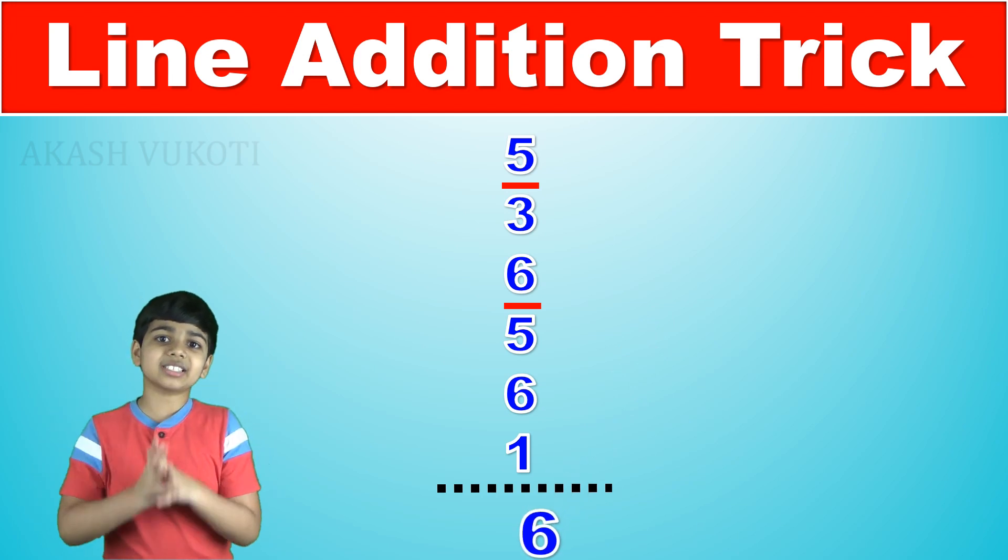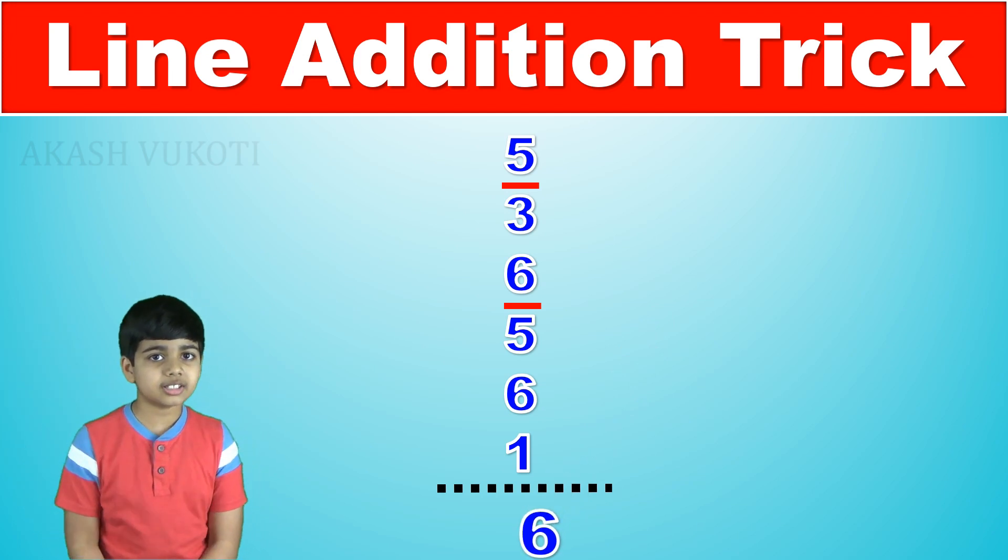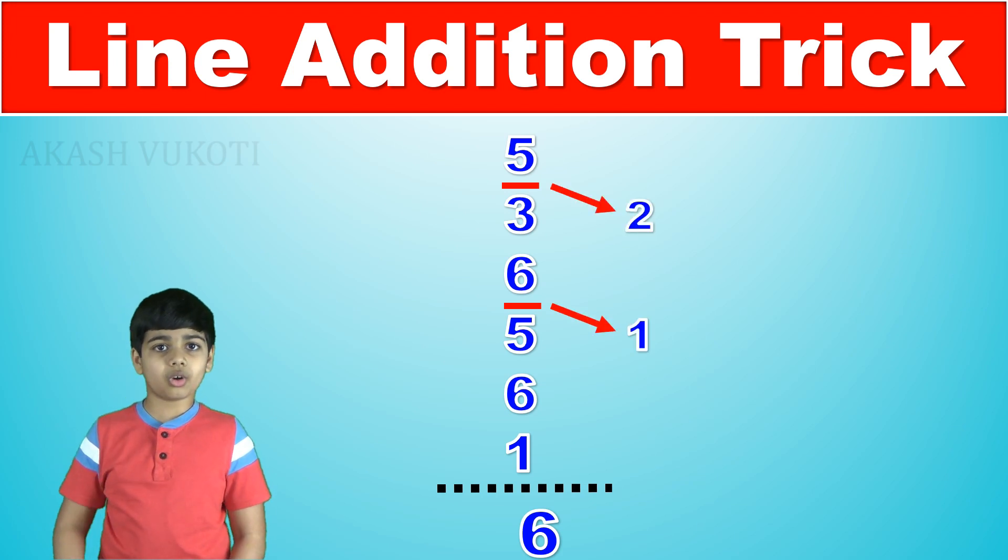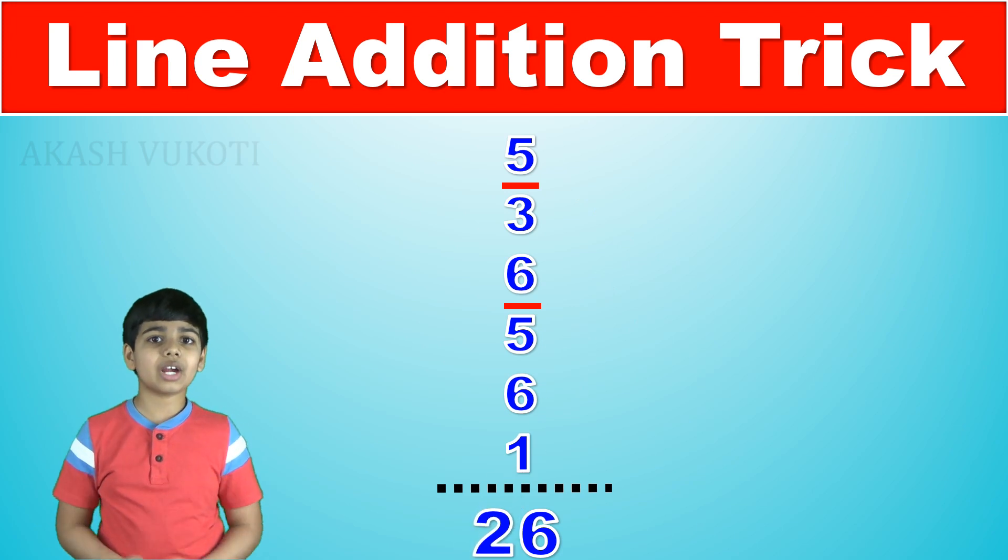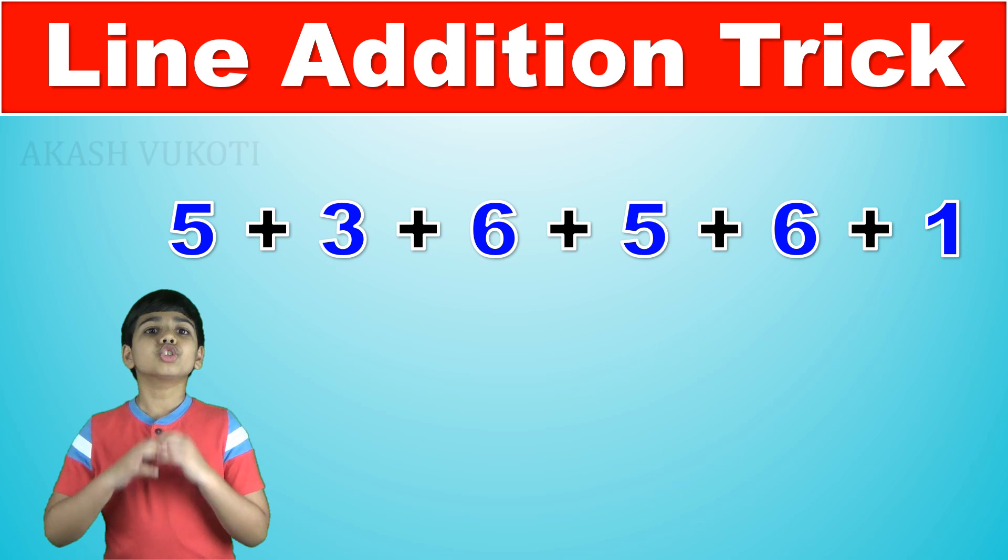Then 1 plus 5 is 6 and as we have finished the adding part, 6 is the last digit of our answer. So write it down there, 6. Then we just count how many lines there are and there are 2. So 2 is the first digit of our answer which means that the final answer is 26.